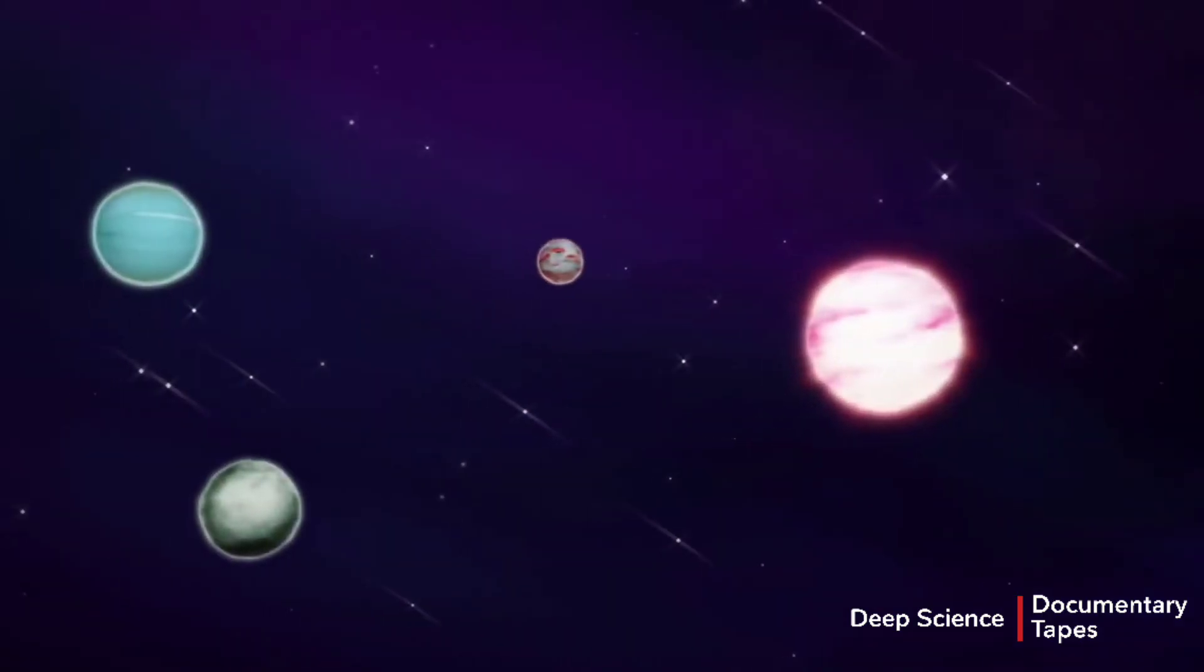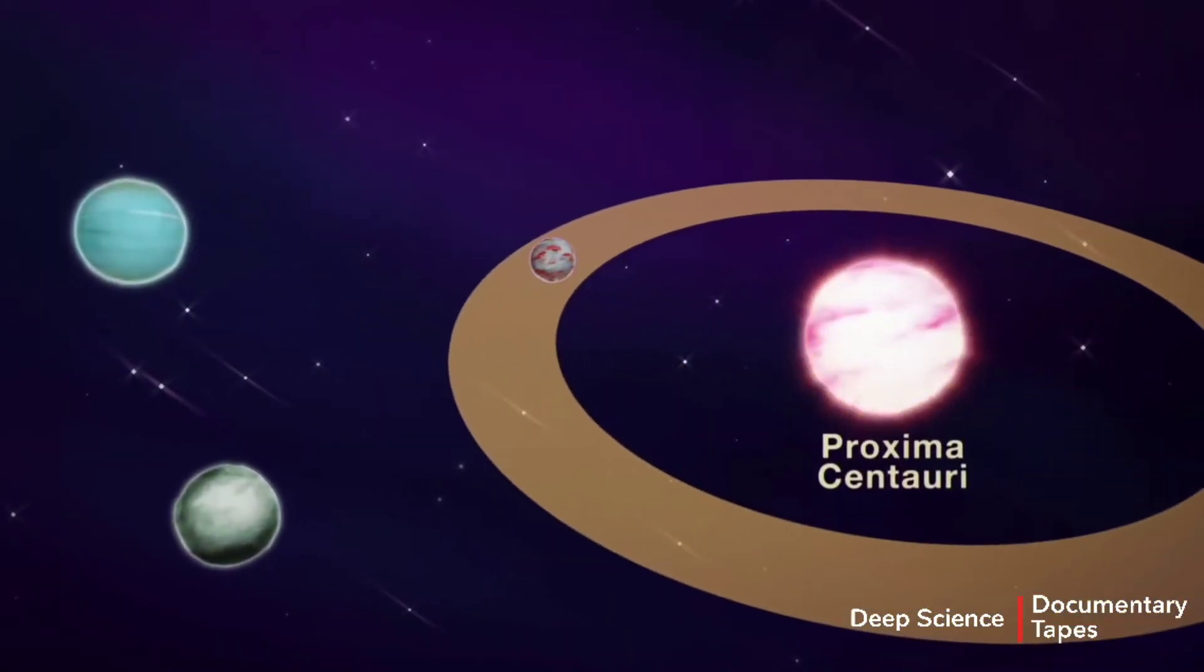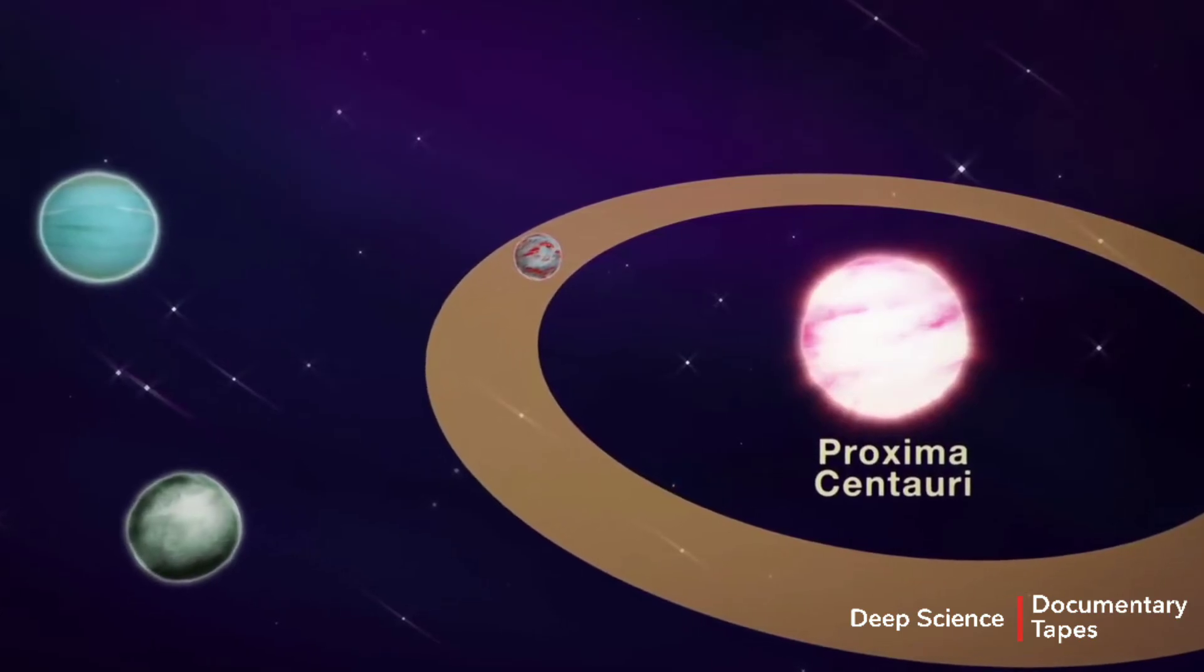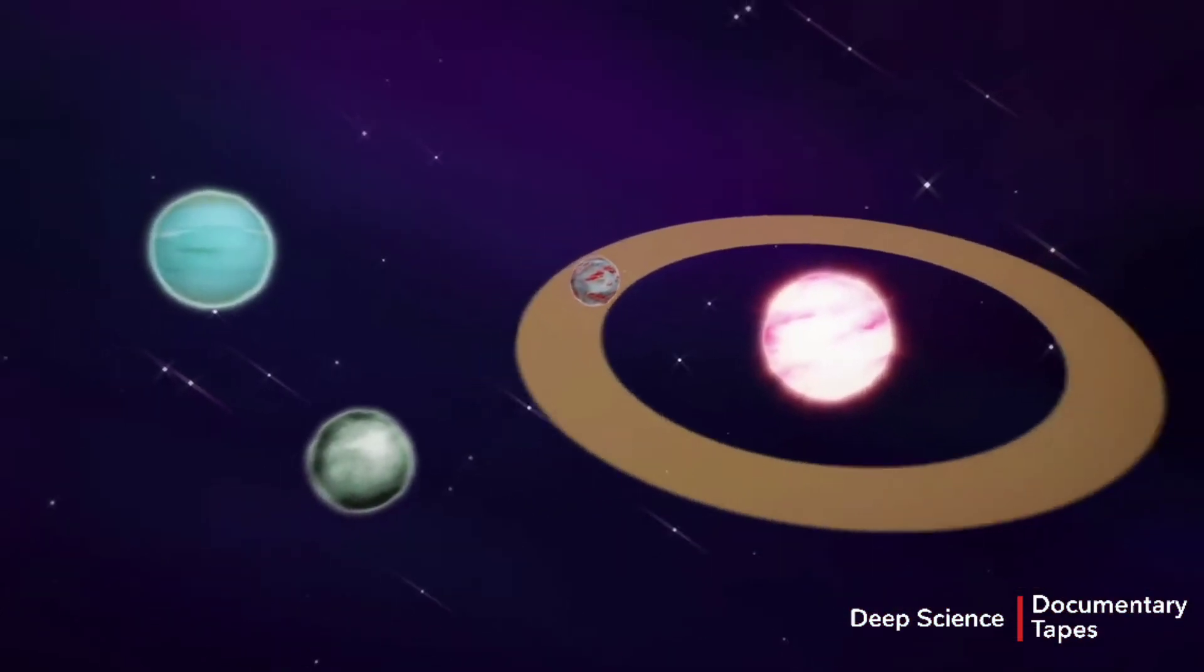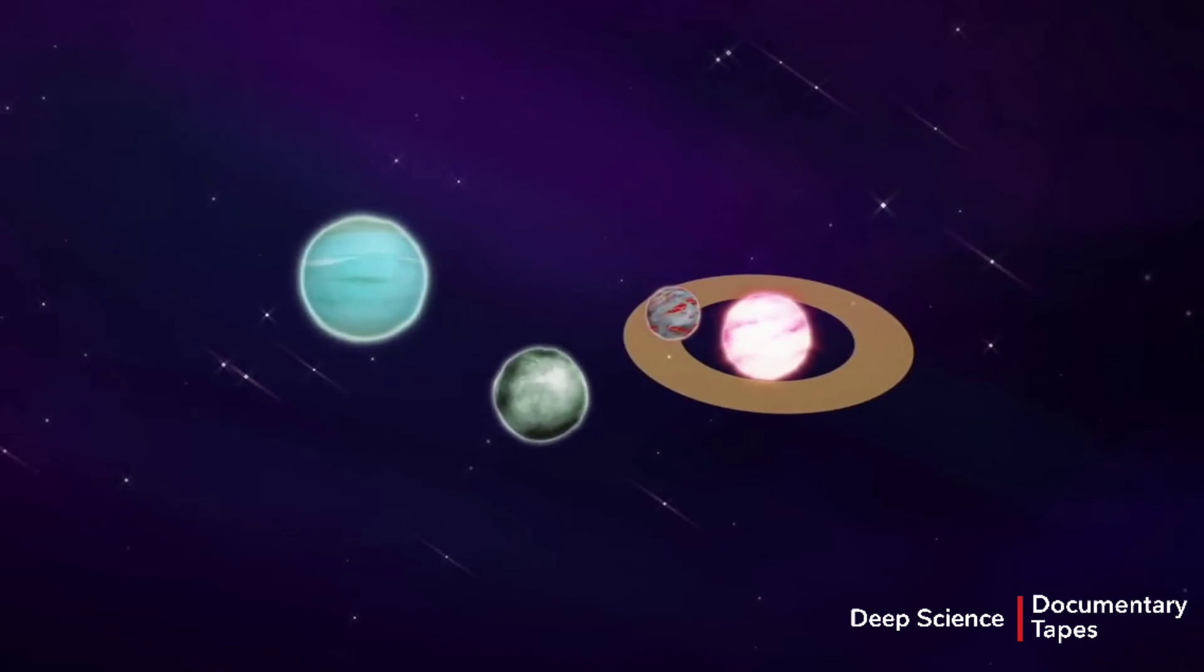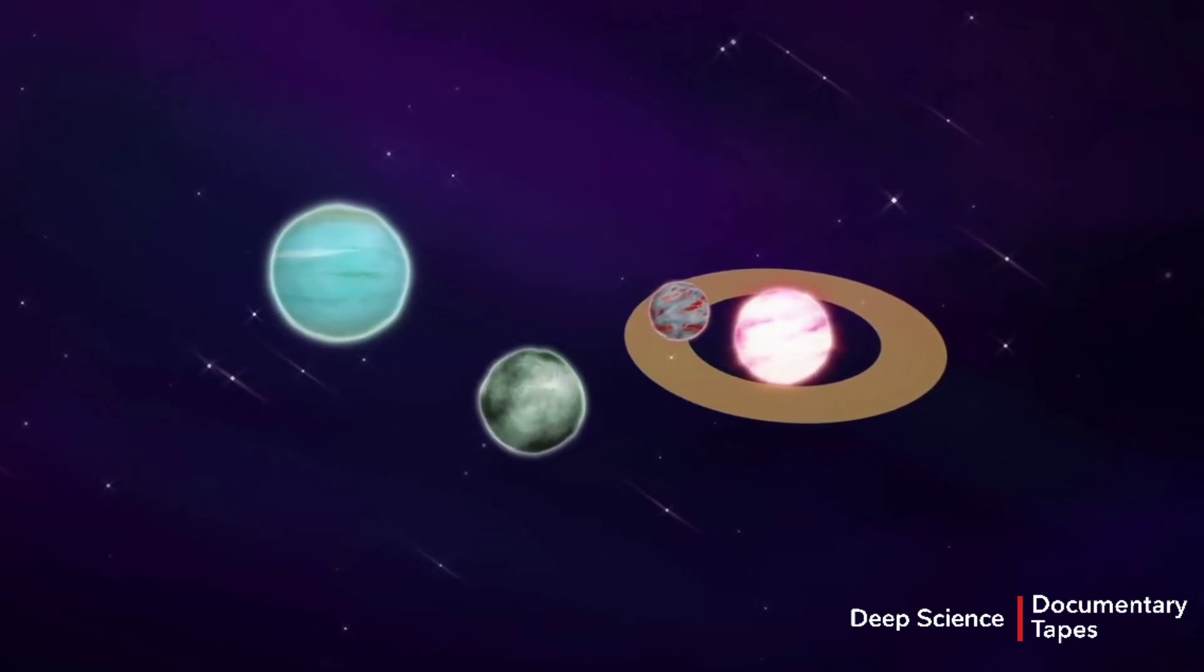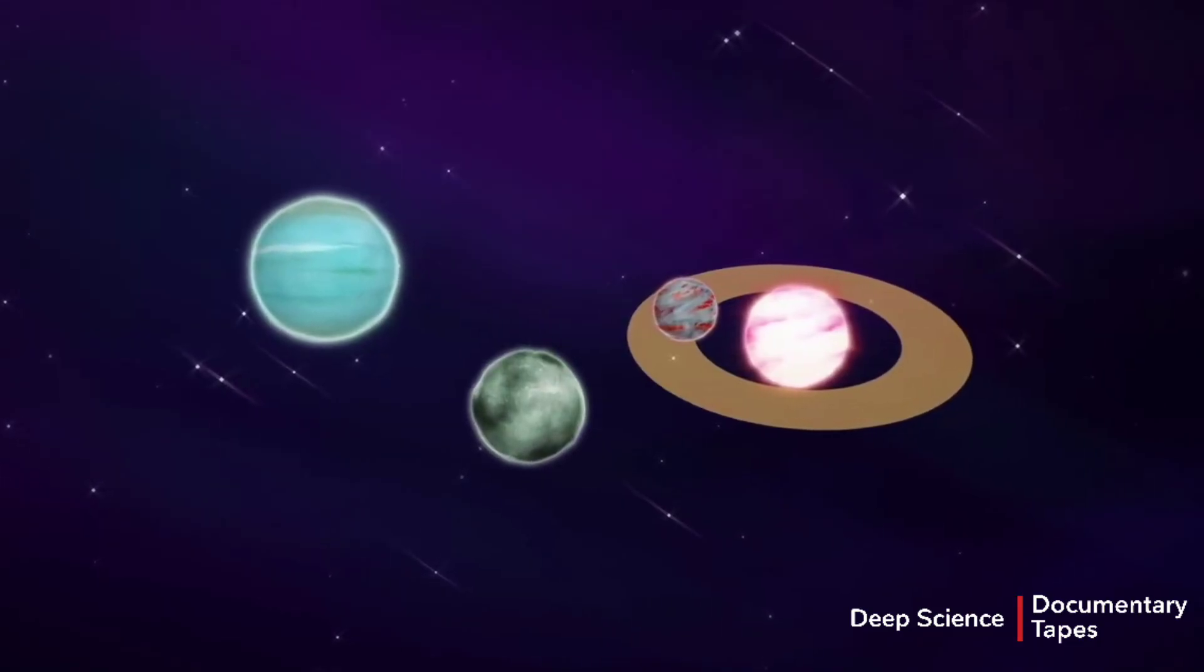The location of the habitable zone depends on how big and bright a star is. The nearest star to our sun, Proxima Centauri, has at least one planet in the habitable zone. But because Proxima is much smaller and dimmer than our sun, its habitable zone is way smaller and closer to the star.